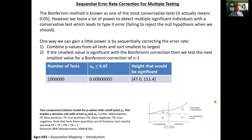A more powerful way to handle this is some type of sequential error rate correction or a false discovery rate. Basically, your first test in the sequential error rate only needs to be at the higher level, but then your next test can be adjusted across the remaining 999,999 tests.